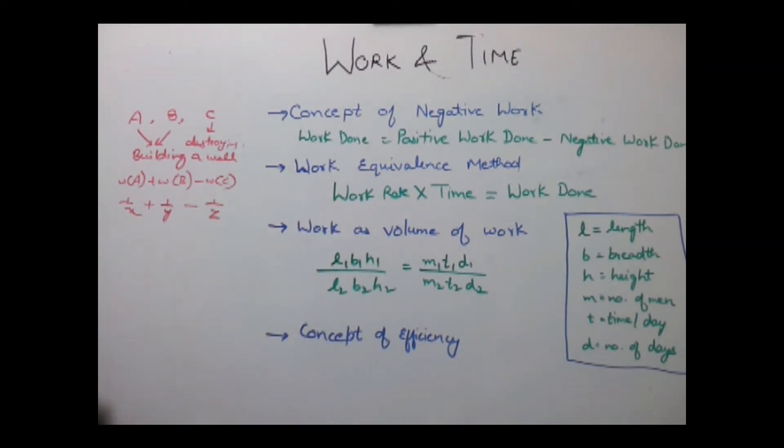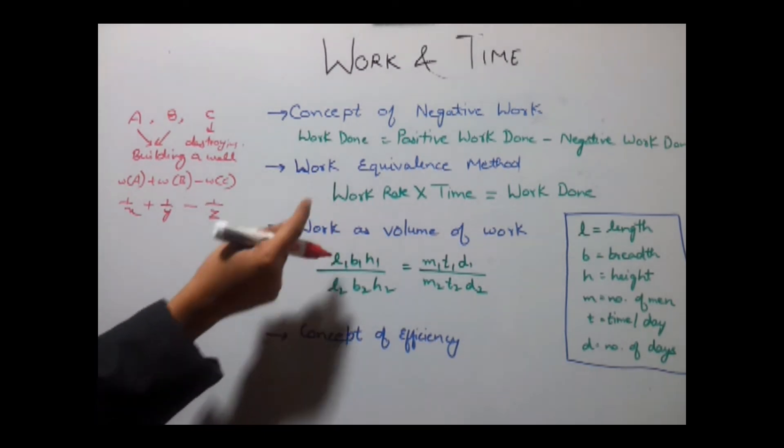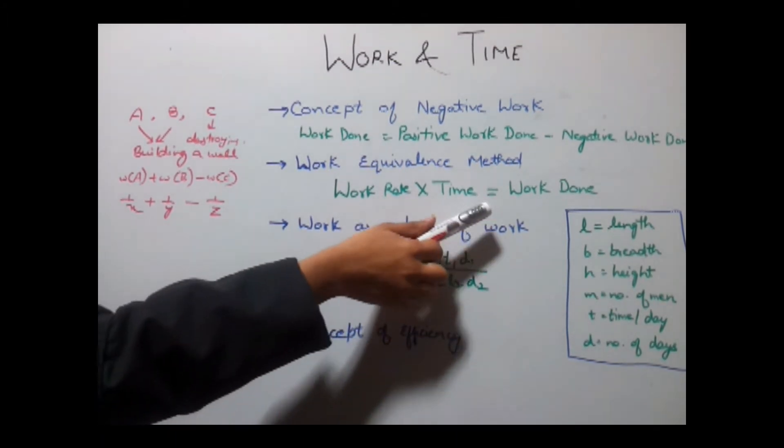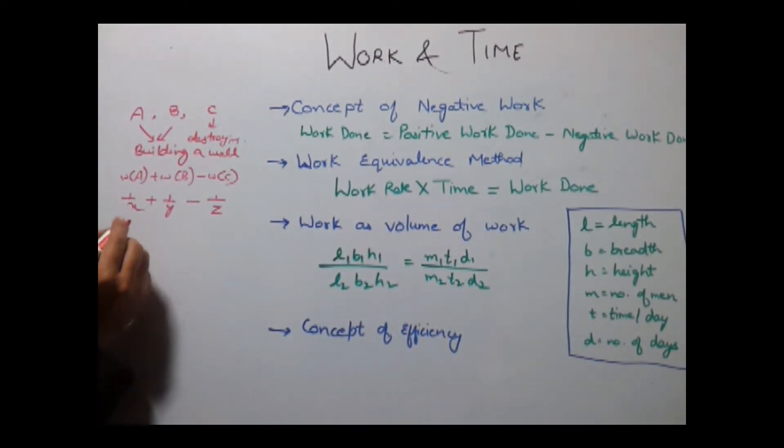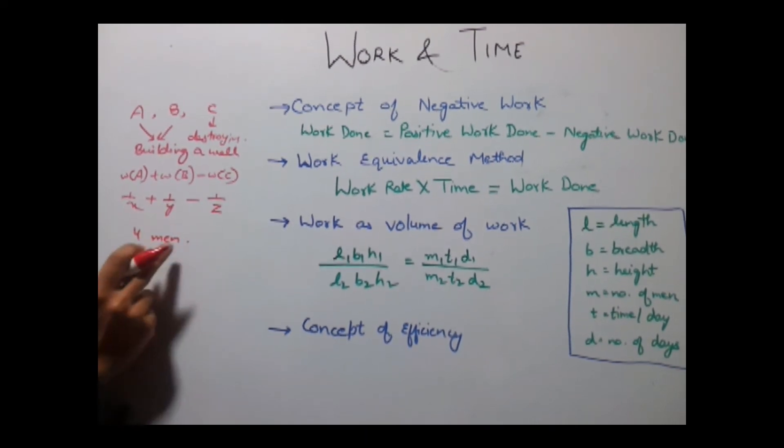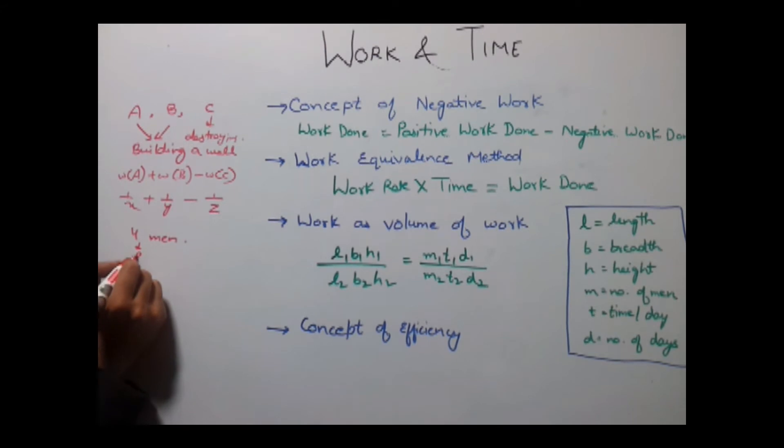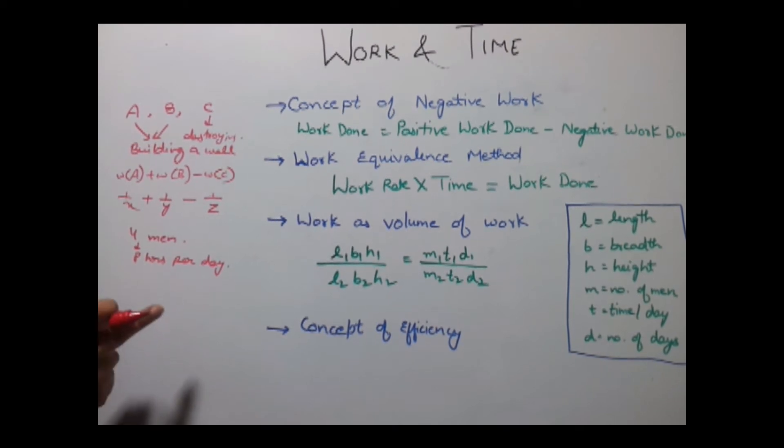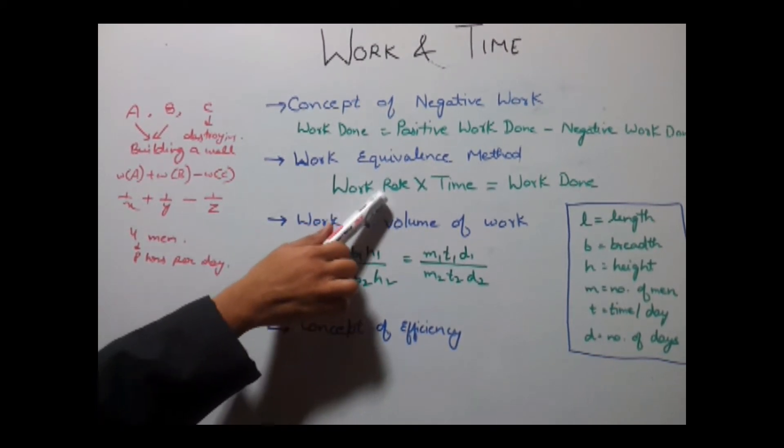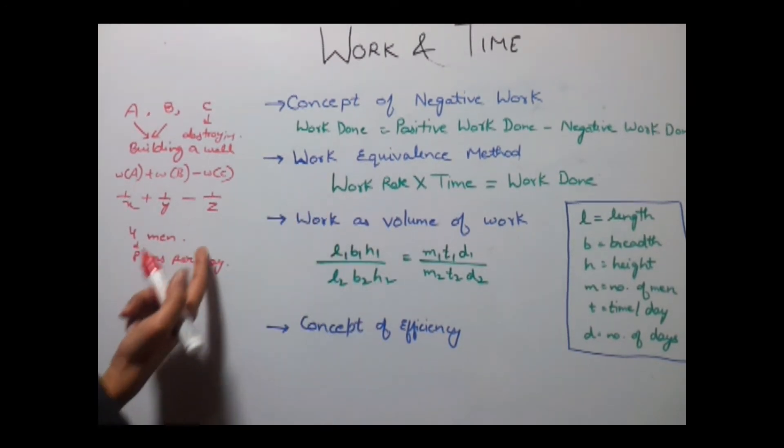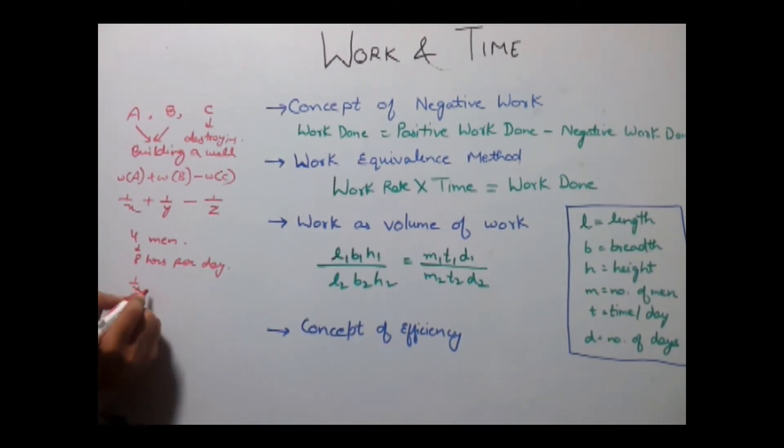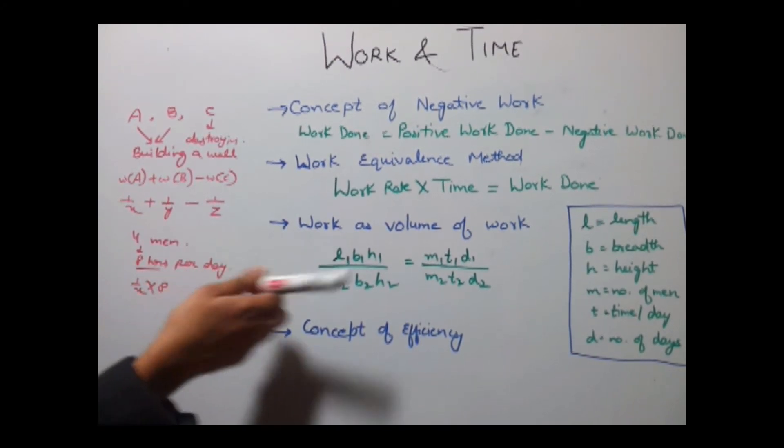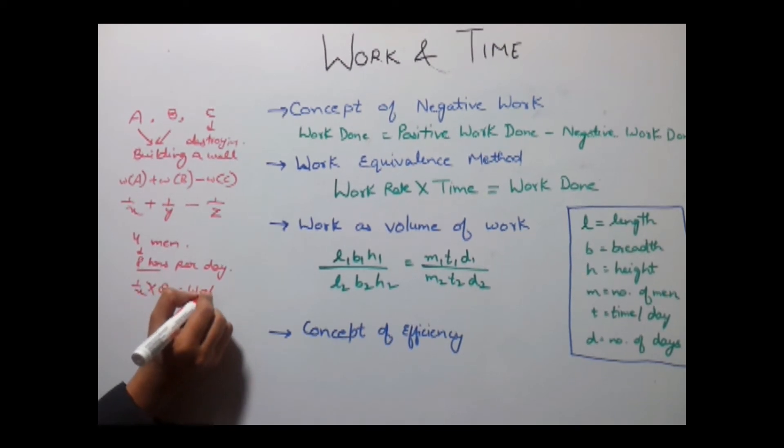Work equivalence method. While solving the questions this equation is generally used which is work rate into time is equal to work done. Say if there are four men who are working say they are working for 8 hours per day and all of them are having the same efficiency, then the total work done would be work rate, that is what they are doing in a single day say it's 1 by X into total time that is 8 hours or say 6 days or whatever it is, is equal to work done.